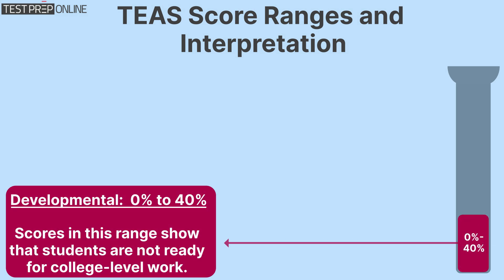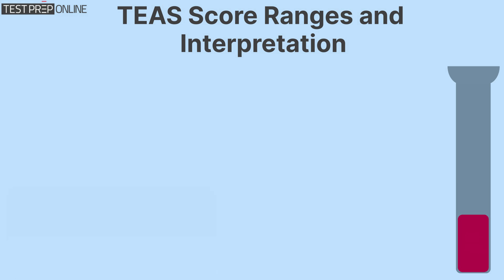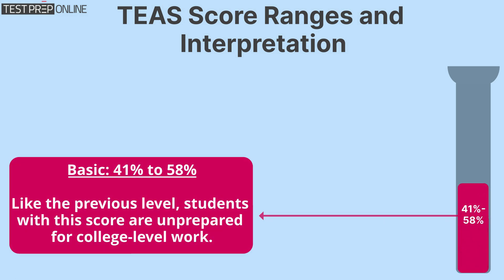DEVELOPMENTAL: 0% to 40%. Scores in this range show that students are not ready for college level work. BASIC: 41% to 58%. Like the previous level, students with this score are unprepared for college level work.